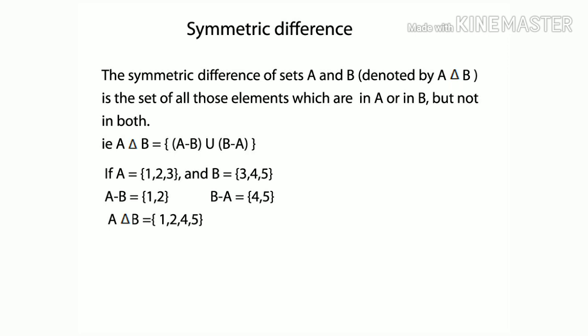The symmetric difference of sets A and B, denoted by A delta B, is the set of all those elements which are in A or in B but not in both. That is, A delta B equal to (A minus B) union (B minus A). If A equal to {1, 2, 3} and B equal to {3, 4, 5}, then A minus B equal to {1, 2}, B minus A equal to {4, 5}, and A delta B equal to {1, 2, 4, 5}.